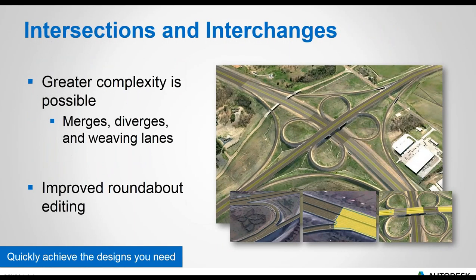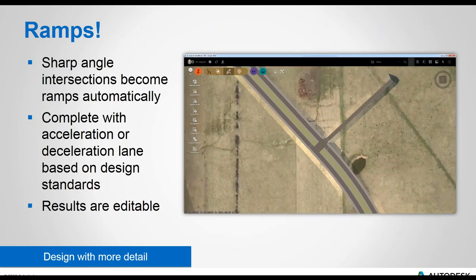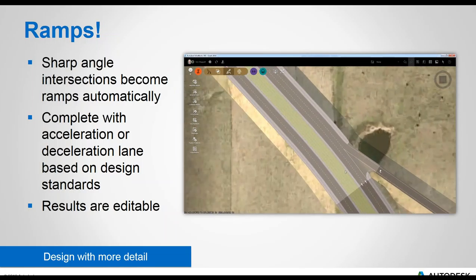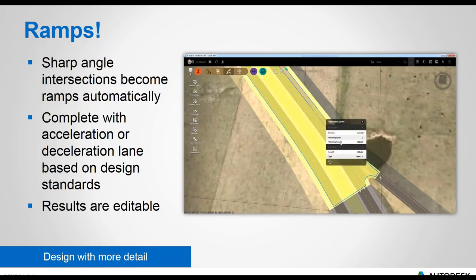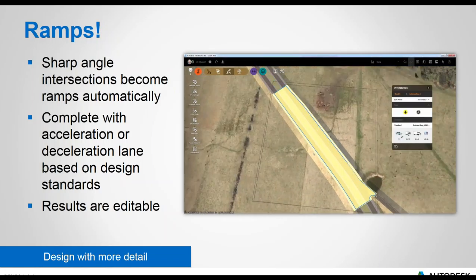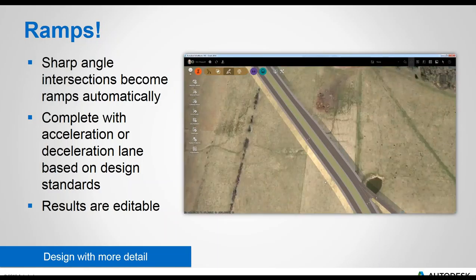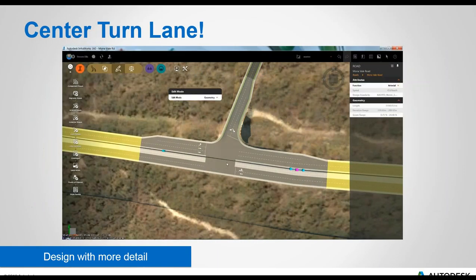Each release has seen major improvements to intersections and interchange design capabilities, and this release is no different. We now have the ability to design mergers, divergers, and weaving lanes for quite complicated interchanges. Ramps have also been added — once an alignment is designed at a sharp enough angle, the ramp functions are applied automatically. This includes an acceleration or deceleration lane and all associated markings. All of these details are editable with either grips or the asset card.